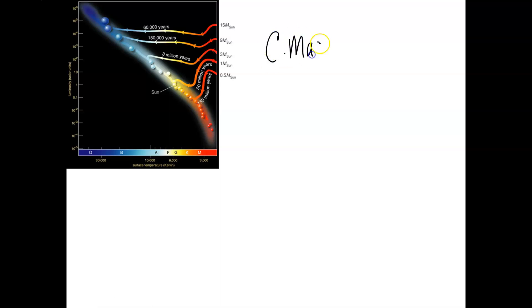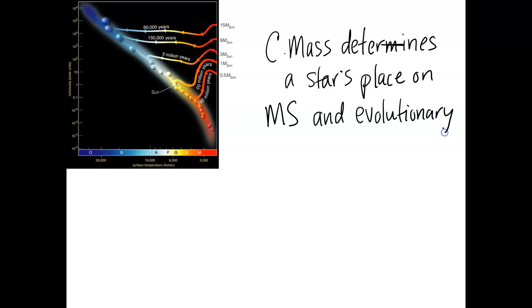We said that mass determines how a star evolves. Mass determines where that star starts life on the main sequence. So mass determines a star's place on the main sequence and how it evolves after that, which we call its evolutionary track on the HR diagram. We're going to see some examples of evolutionary tracks as we go on. Low mass stars have different ones from high mass stars. An evolutionary track is just where the star goes on the HR diagram.